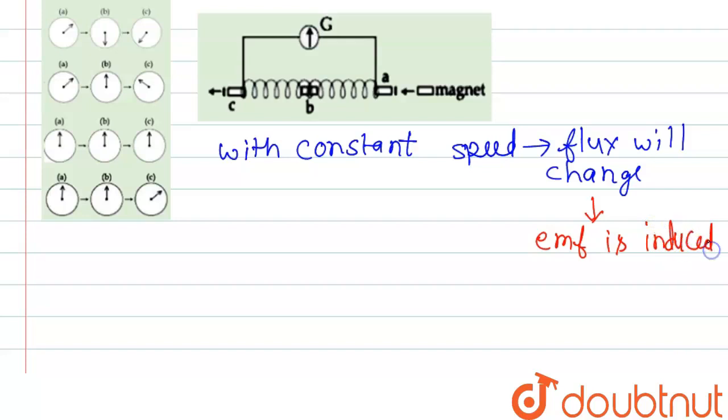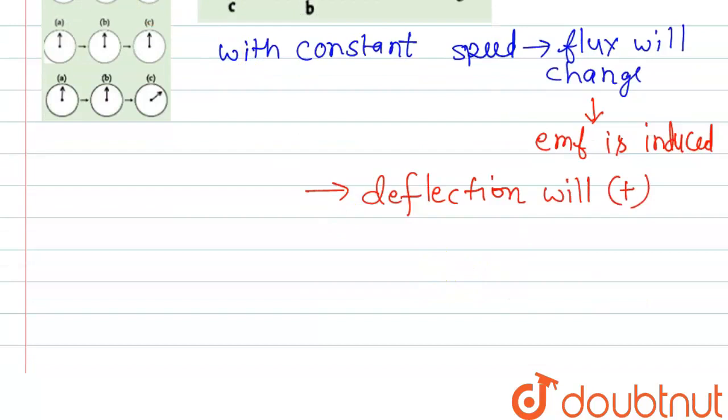So the deflection will be positive. So in the galvanometer the needle will be like this, in the galvanometer.